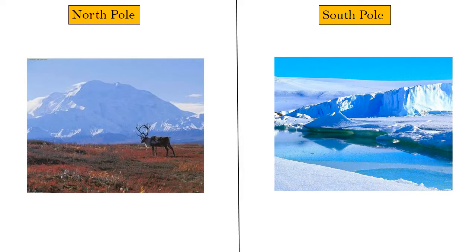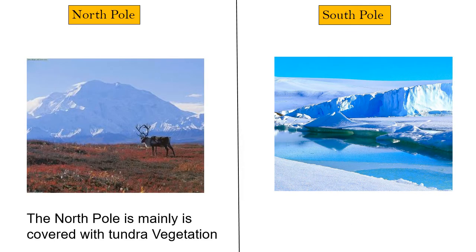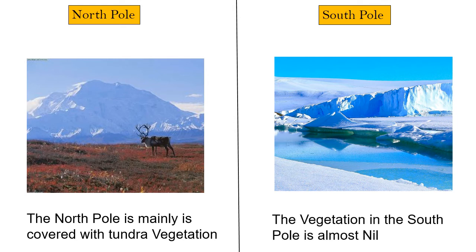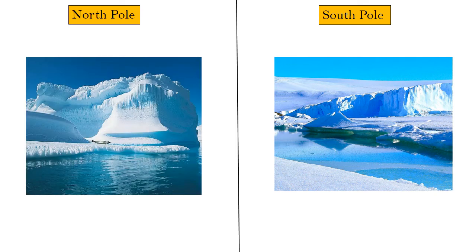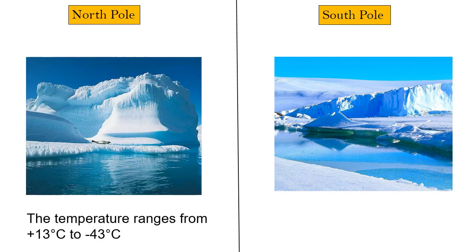The North Pole mainly consists of tundra vegetation with small herbs and shrubs, while vegetation at the South Pole is almost nil. At the North Pole, the temperature ranges from 13 degrees Celsius to –43 degrees Celsius.